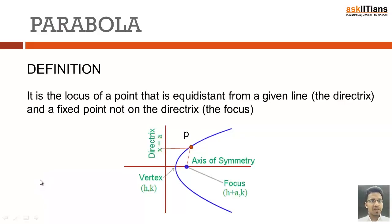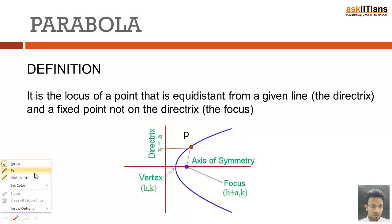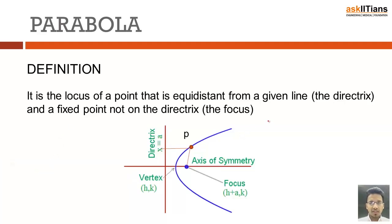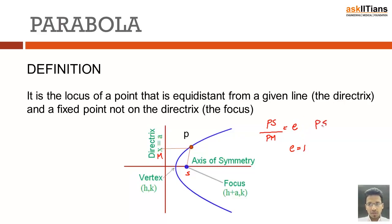Let us begin. A parabola is a locus of a point that is equidistant from a given line and a fixed point which is not on the directrix. If you remember, we had PS/PM = e, and for a parabola e should be 1, so PS will be equal to PM.